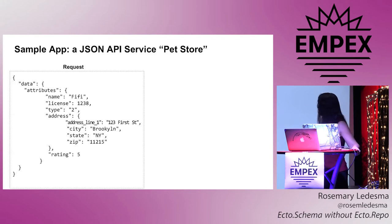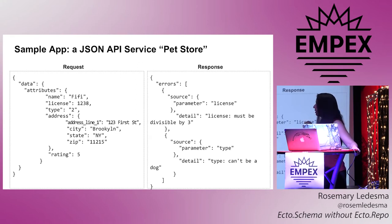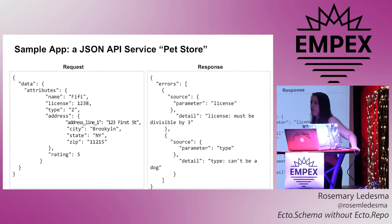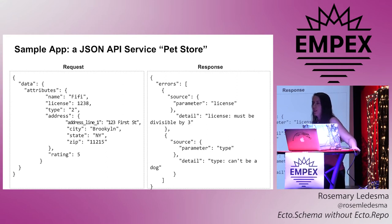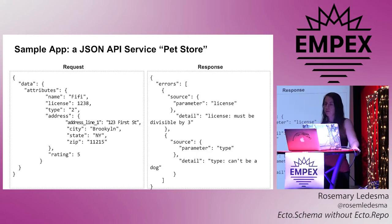I'm demonstrating how you can use ECTO schema to help with some of the things you need to do to be a JSON API standard service. That's a sample request you might hit the app with — you're trying to create a pet and providing some data. I'm going to use ECTO schema to provide an error response that helps you realize you've got problems, maybe you're missing something or there's an error in your data. That would be a pain to implement by hand, but I'm going to show you how to get it pretty much for free.